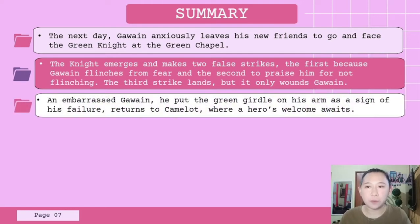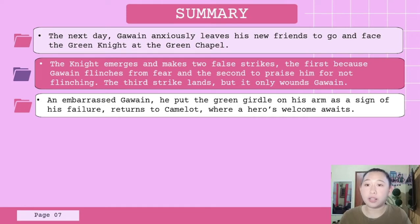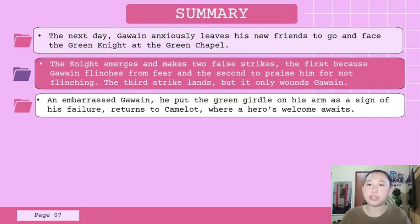Embarrassed, Gawain puts the green girdle on his arm as a sign of his failure and returns to Camelot, where a hero's welcome awaits. When he confesses his sin, King Arthur admires his humility and orders the court to wear symbolic green bands in solidarity.